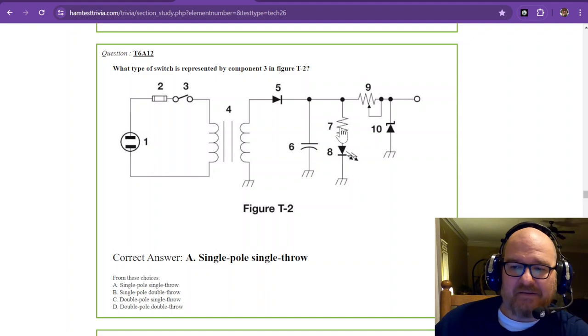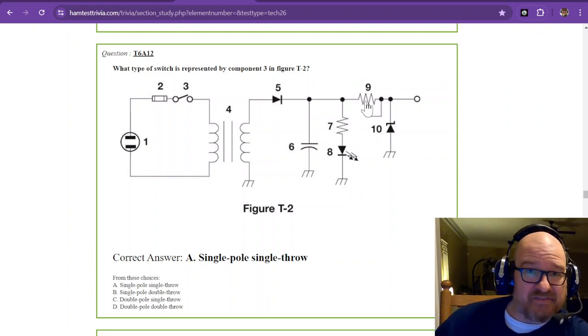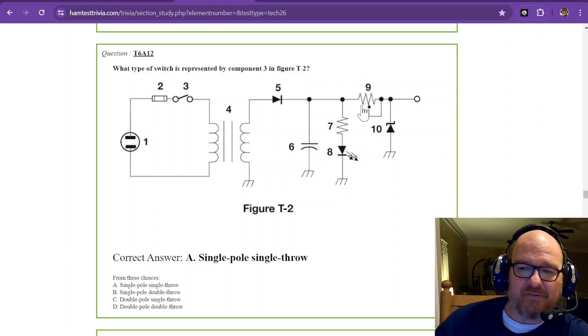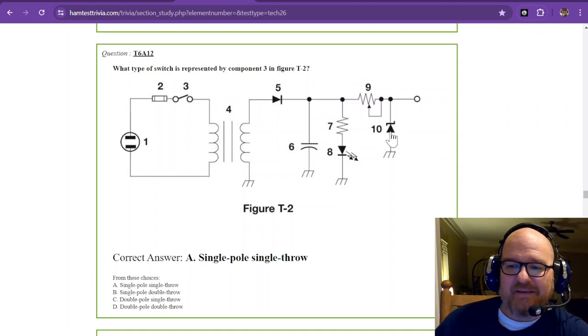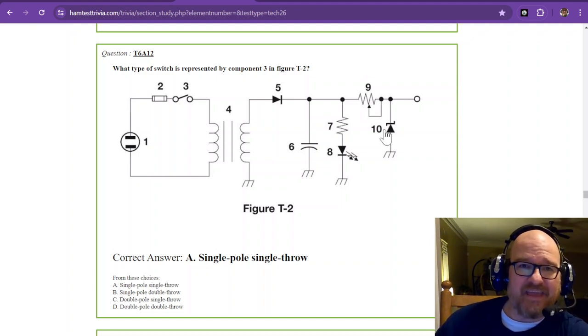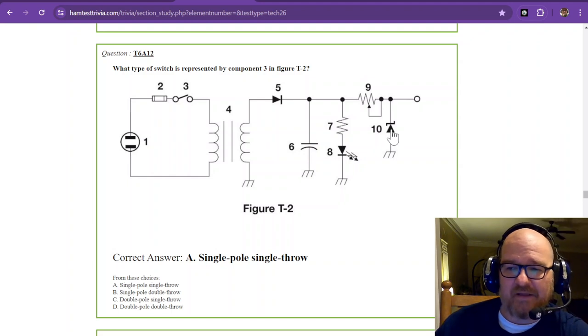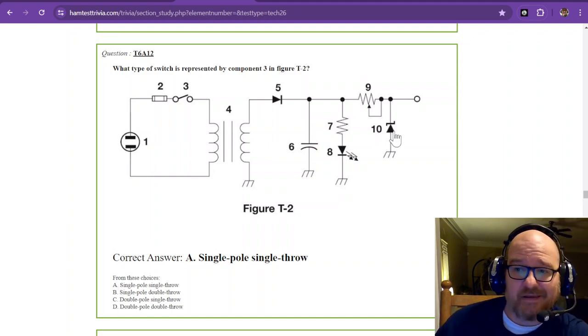Number nine, sort of like number seven, it is a resistor of sorts, but it is a variable resistor because you can use this wiper to vary the amount of resistance, whether it be no resistance or all the resistance. And then number 10 is a diode that's called a Zener diode, Z-E-N-E-R, Zener diode, or Zener. I'm not really sure how to say it.